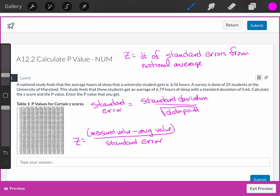a national study finds that the average hours of sleep that a university student gets is 6.56 hours. A survey is done of 25 students at the University of Maryland. This study finds that these students get an average of 6.79 hours of sleep with a standard deviation of 0.66 hours.